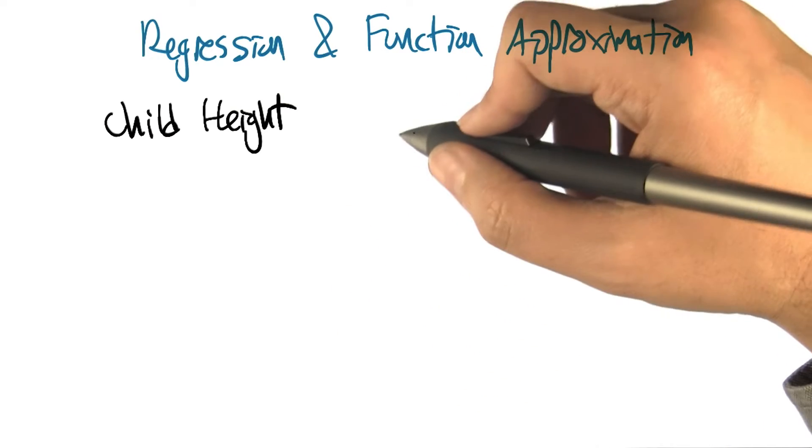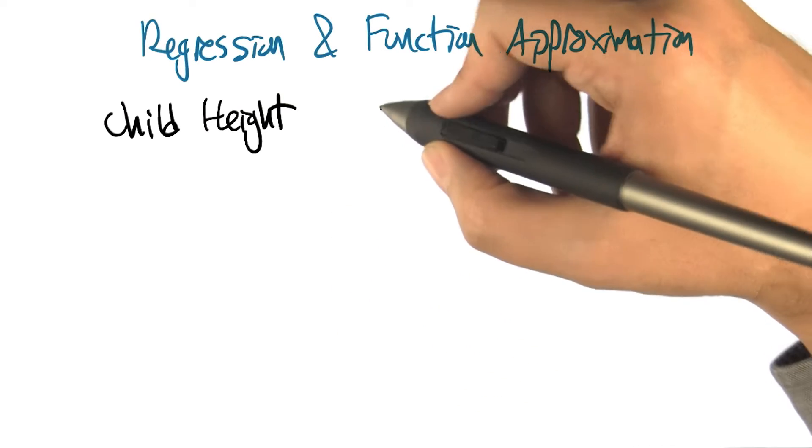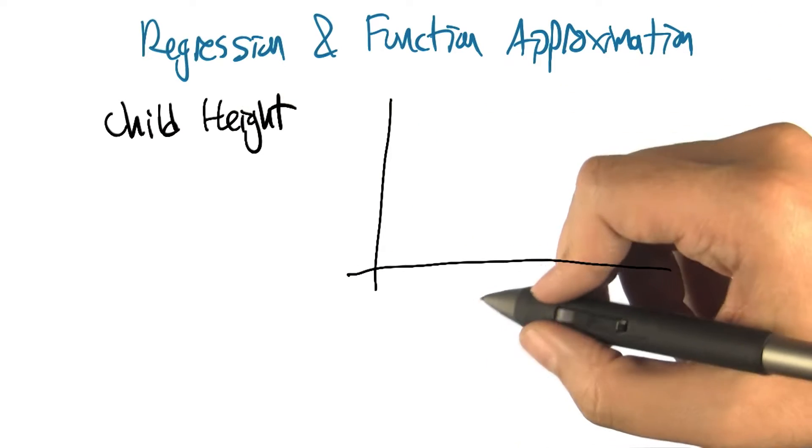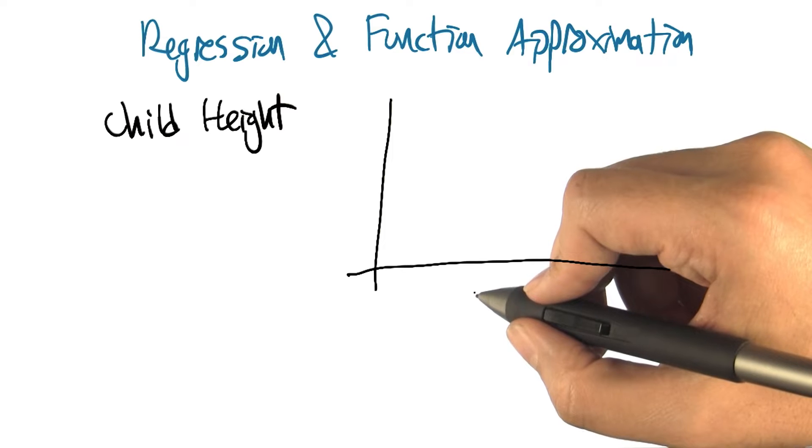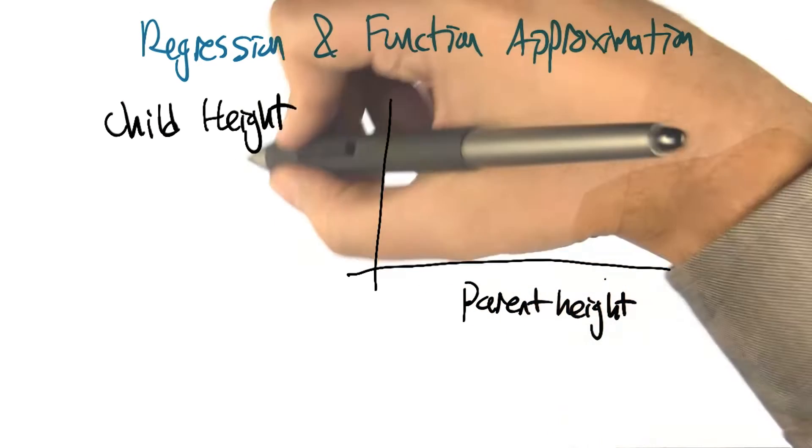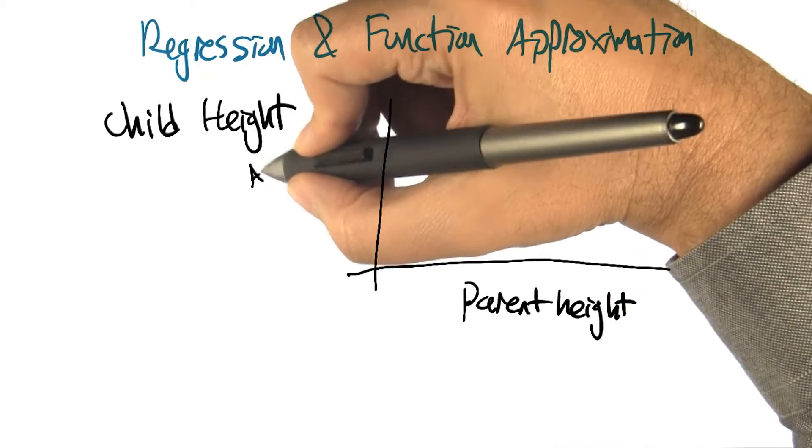So it turns out that the relationship is, here's the connection between them. I'm going to draw a graph and on this axis will be the parent height and on this axis will be the average child height.